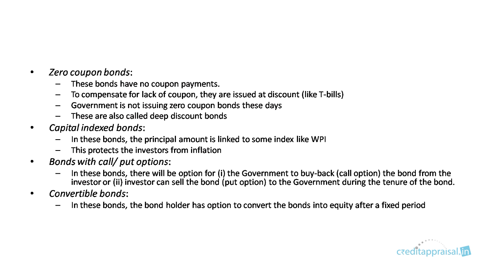Then there is something called zero coupon bonds. Zero coupon bonds have no coupon payments — zero percent interest. You might ask why would people buy them. Say a thousand rupee bond for five years: at the end of five years you get back a thousand. The trick is, to compensate for this lack of coupon, these bonds are issued at a discount. When the face value is a thousand, they might issue it for 920 or 930. Even though you don't get coupon payments, at maturity you get back a thousand, compensating you for the discount paid at issuance.